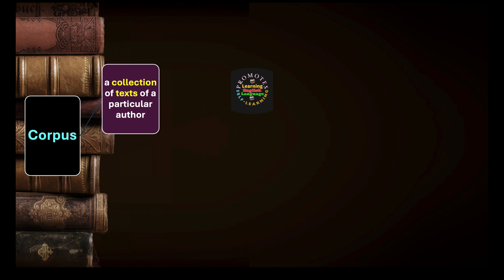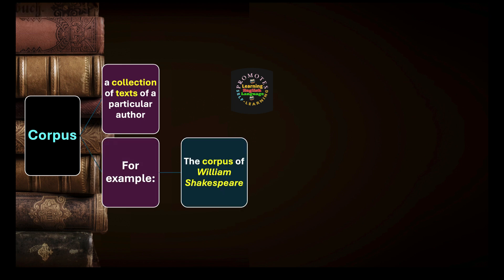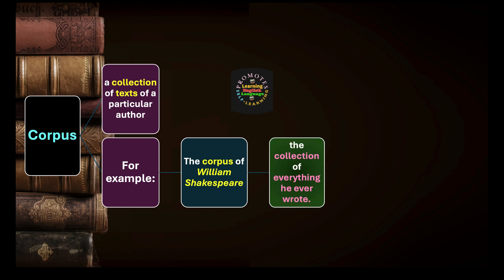In that way, it is a group of texts, a collection of texts of a particular author, of a particular writer, of a particular creative person, of a particular leader in a speech — all that. For example, we can say the corpus of William Shakespeare, William Wordsworth, Charles Dickens. Thus, it means the collection of everything he ever wrote — everything William Shakespeare ever wrote.